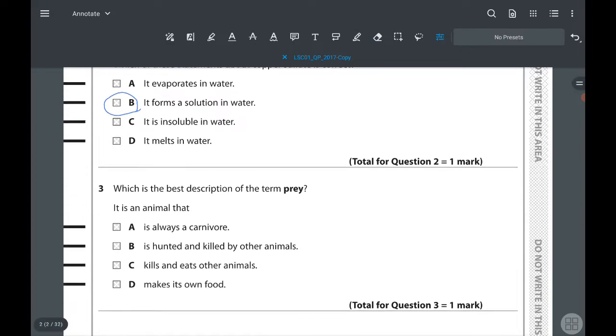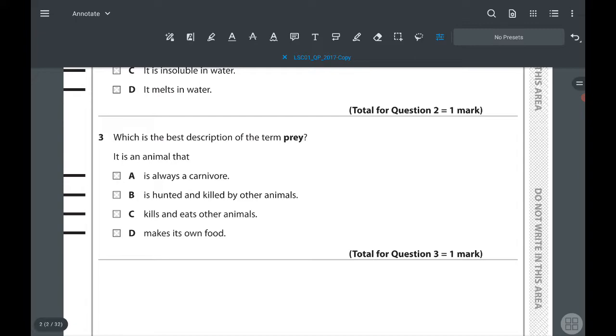Next one: which is the best description of a term prey? Prey can or cannot be a carnivore - carnivore only eats meat. The correct answer is 'hunted and killed by other animals.' That is the correct answer.